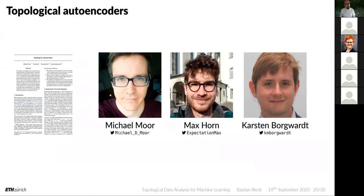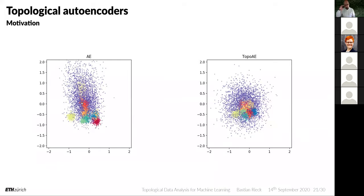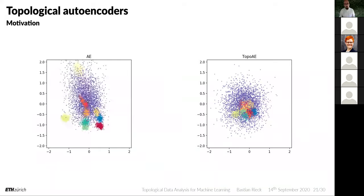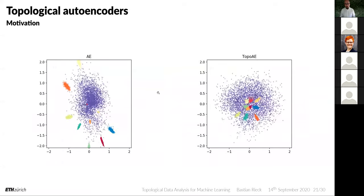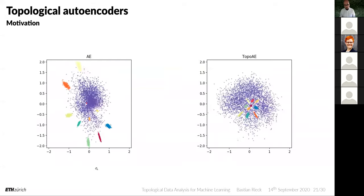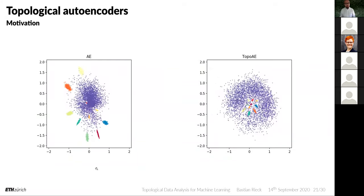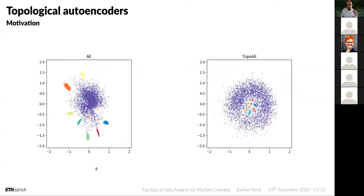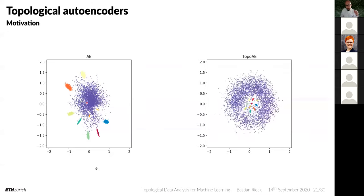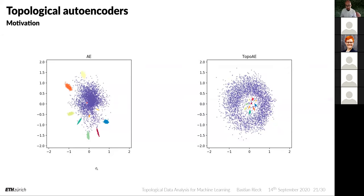Moving on to the topological autoencoders paper, accepted at ICML 2020. Here we solve a different problem — not classification but constraining topological information in autoencoders. The basic idea: what happens if we tell an autoencoder about the underlying topological characteristics of the space, and what if we can constrain an autoencoder with the topology of the latent space?